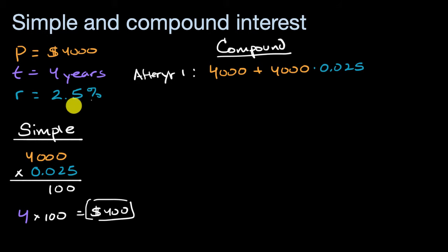Now the difference between compound and simple is what we start seeing after year two. Because then whatever amount that we have here, we're going to multiply that times 2.5% to figure out the new amount of interest that we're getting. Or put another way, I could simplify this expression.